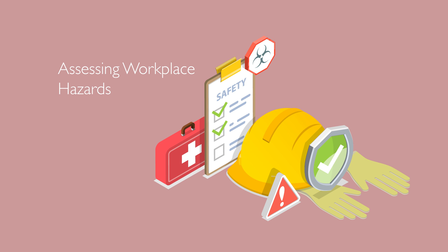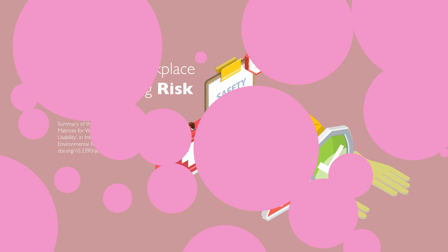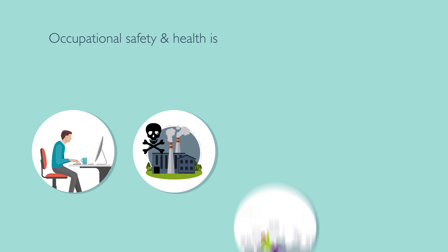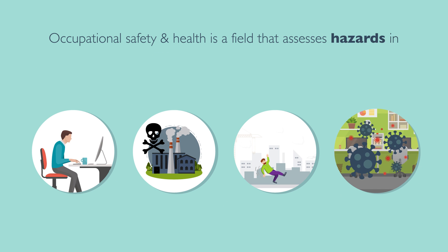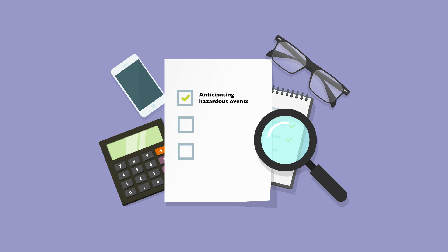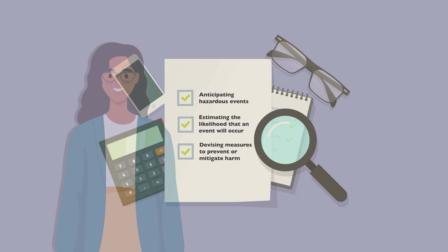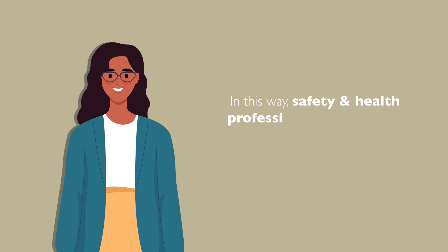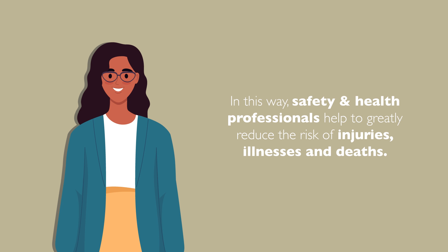Assessing Workplace Hazards Using Risk Matrices. Occupational Safety and Health is a field that assesses hazards in workplace settings. It involves anticipating hazardous events that could harm workers, estimating the likelihood that an event will occur, and devising measures to prevent or mitigate harm. In this way, safety and health professionals help to greatly reduce the risk of injuries, illnesses and deaths.